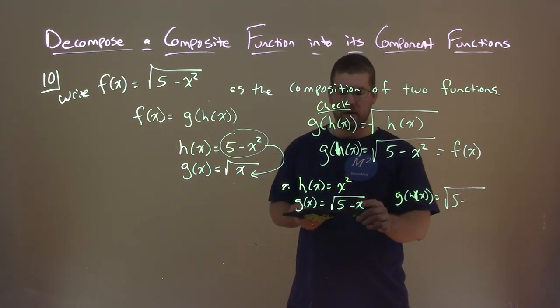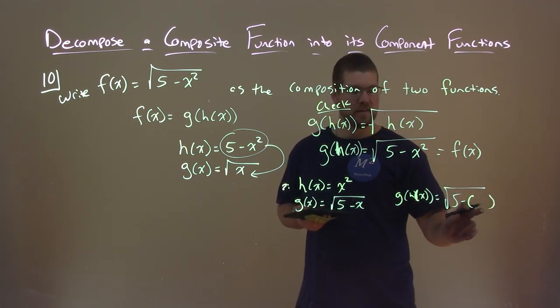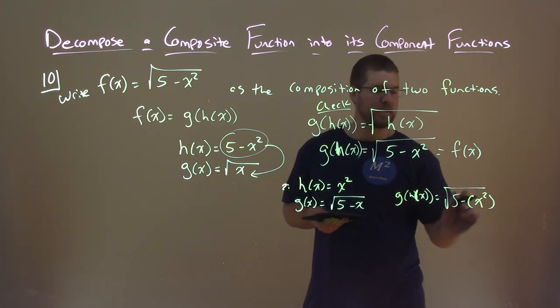And we said, yeah, 5 minus x, put a space there. We put h of x there, h of x is x squared. Same thing.